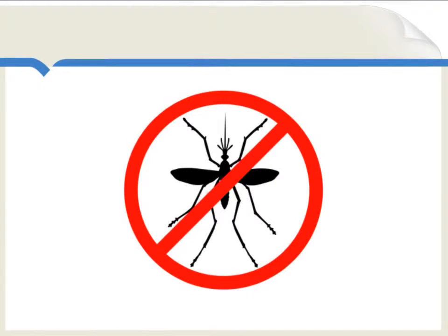For some general background, in the year 2002, the World Health Organization estimated that about a quarter of young children's deaths in Africa were due to malaria. Malaria was also responsible for over one million African deaths a year. Malaria, of course, is carried by mosquitoes.